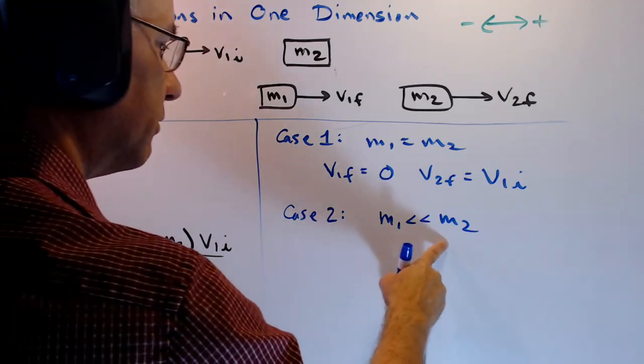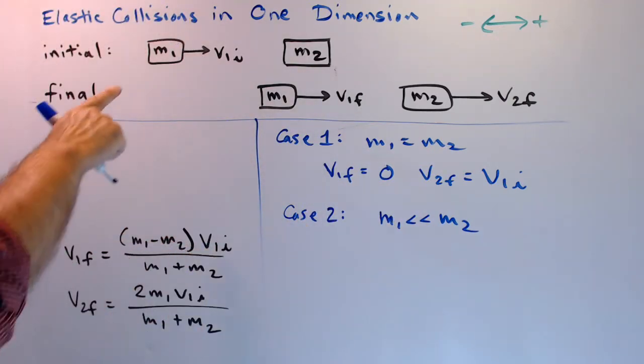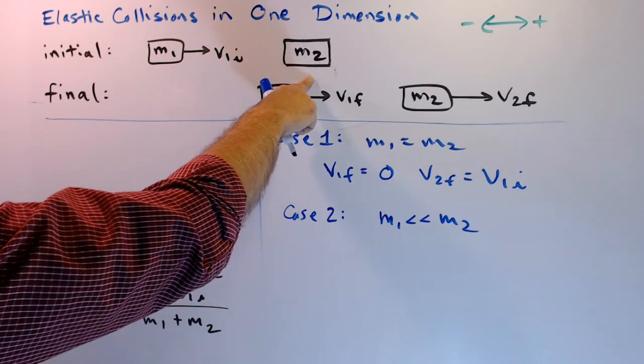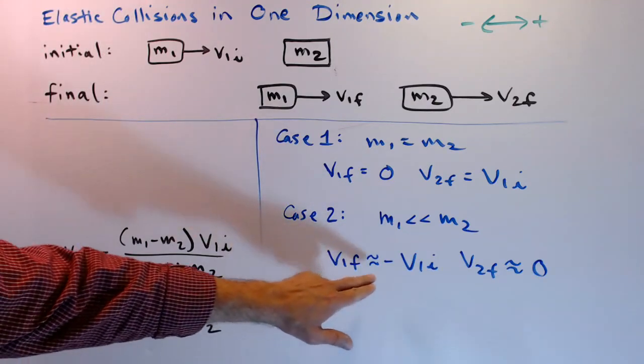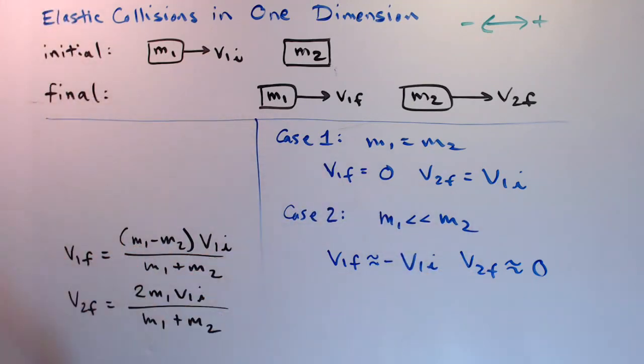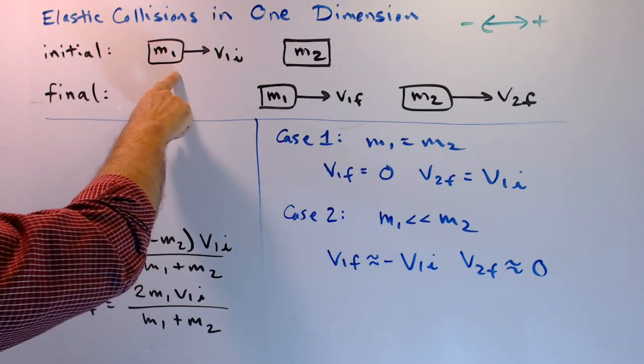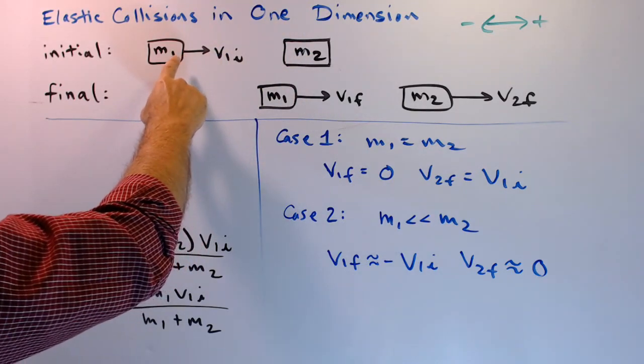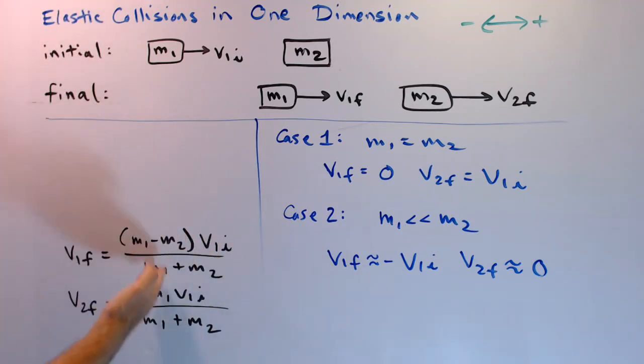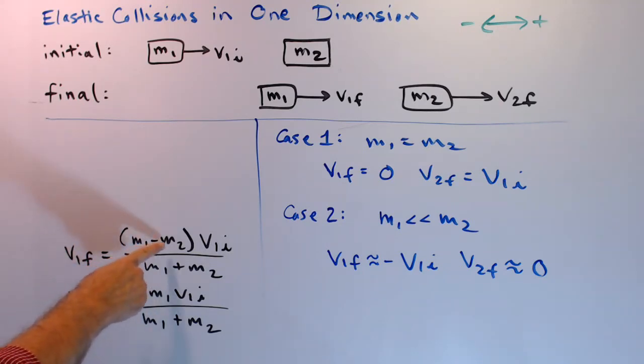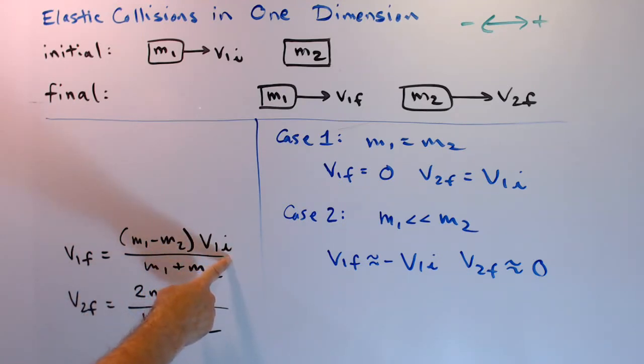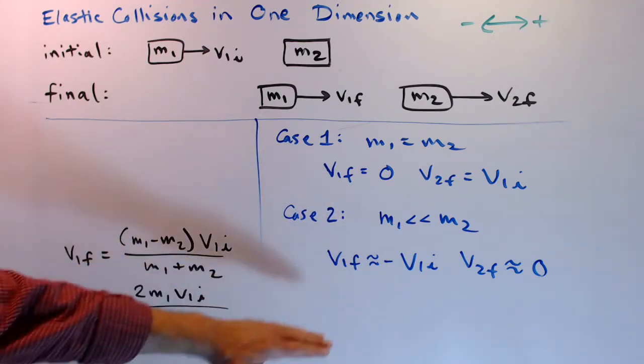Case two, mass one is much less than mass two. It's like mass one is a ping pong ball and mass two is a bowling ball. What happens here? So v1 final is equal to negative v1 initial, v2 final is equal to zero. So mass two doesn't budge and mass one just bounces right off of mass two back the opposite direction at the same speed. If you don't believe me, use the formulas. Make up some numbers, plug them in, see what you get. I suggest you make mass one equal to one, mass two equal to a thousand, and v1 initial can be whatever you want. You get an answer very close to what I just said here. Try it again with mass two equal to a million and the answer will be even closer to these.